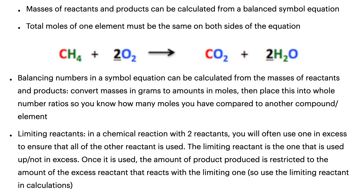Balancing numbers in a simple equation can be calculated from the masses of reactants and products. Convert those masses into amounts in moles and place this into whole-number ratios so you know how many moles you have compared to another compound. Moving on to limiting reactants: in a chemical reaction with two reactants, you'll often use one in excess to ensure that all of the other reactant is used up. The limiting reactant is the one that is used up — not in excess. If something was used in excess in a reaction, you can pretty much eliminate that from any calculations; you just want the one that is limited.